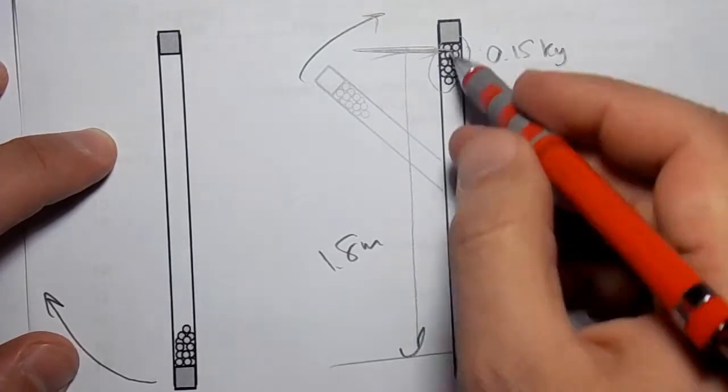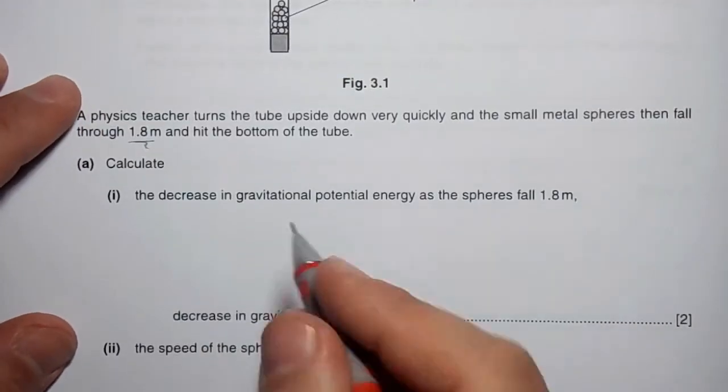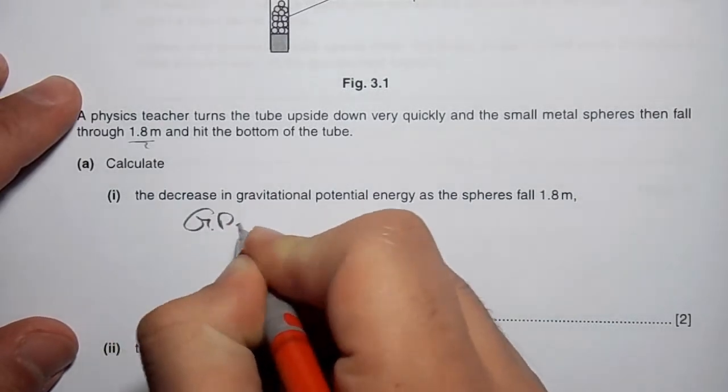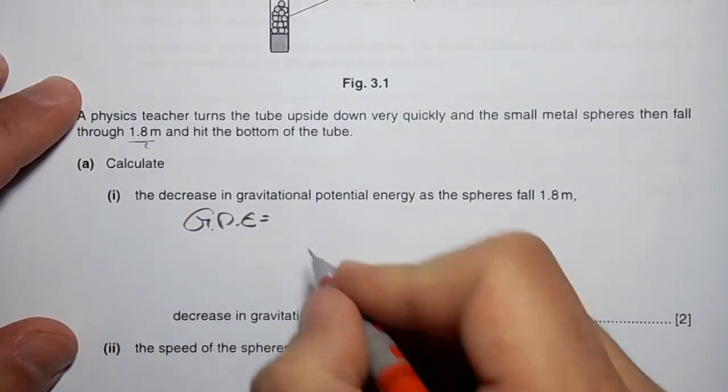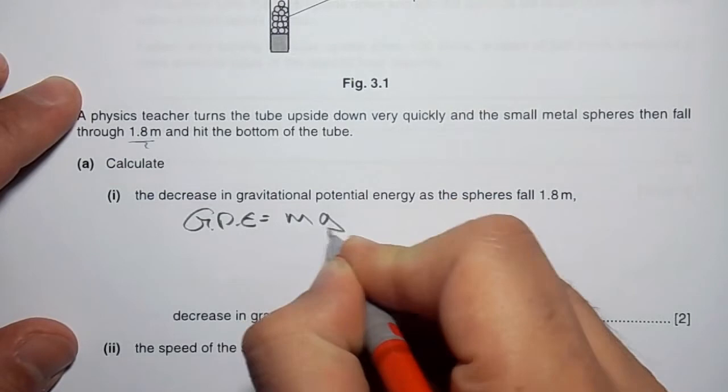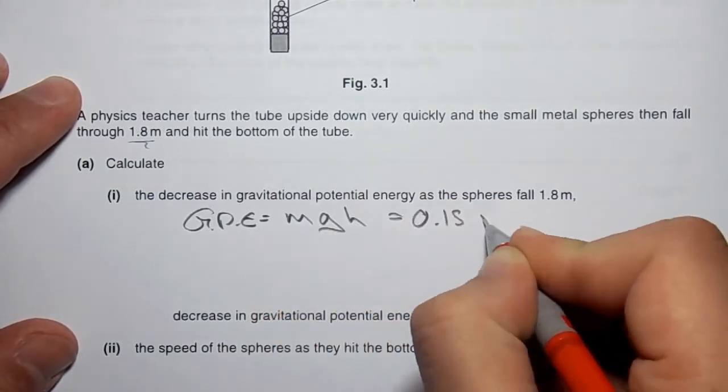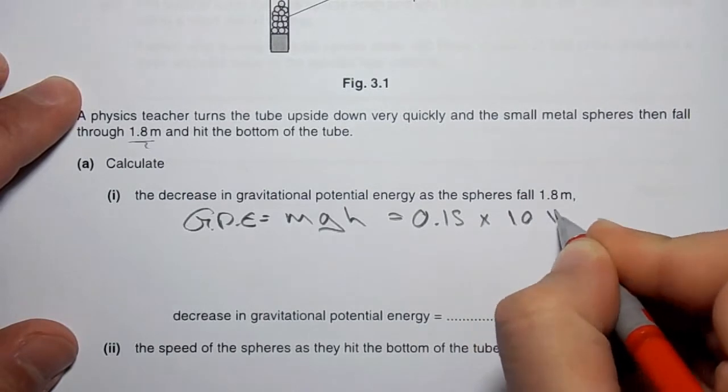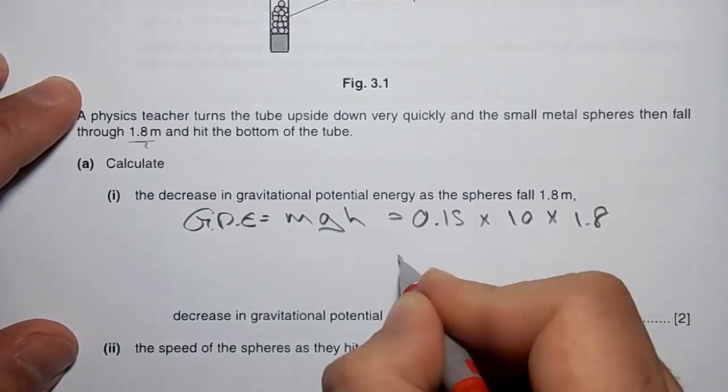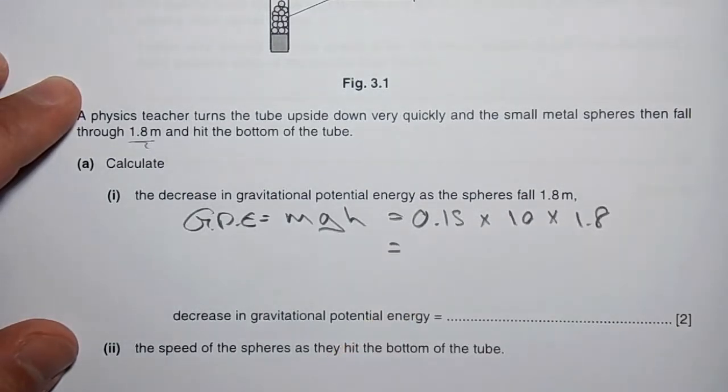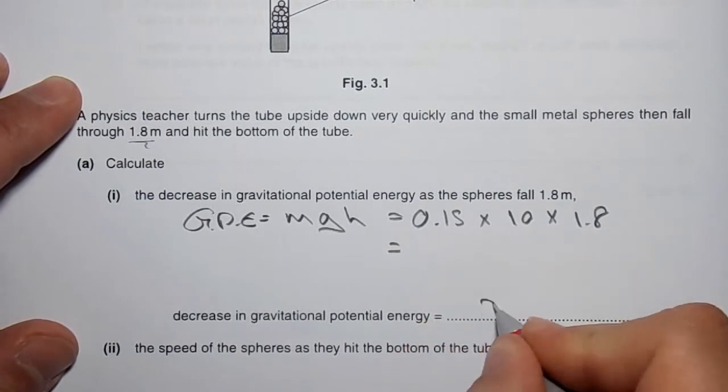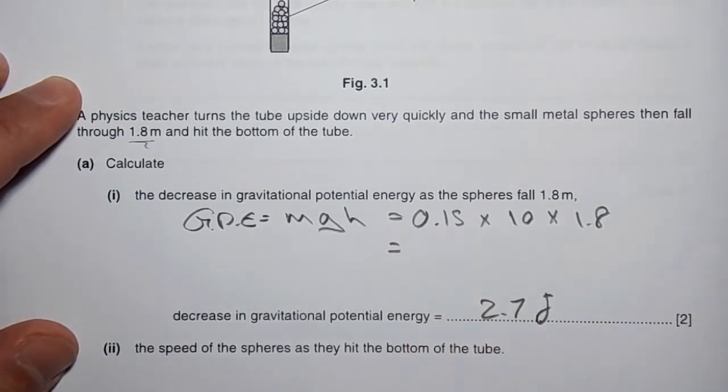Let's calculate how much potential energy they lost. The gravitational potential energy lost since they descended is MGH. The sphere weighs 0.15 kilograms, g is 10, and H is 1.8 meters. This calculation gives you 2.7 joules.